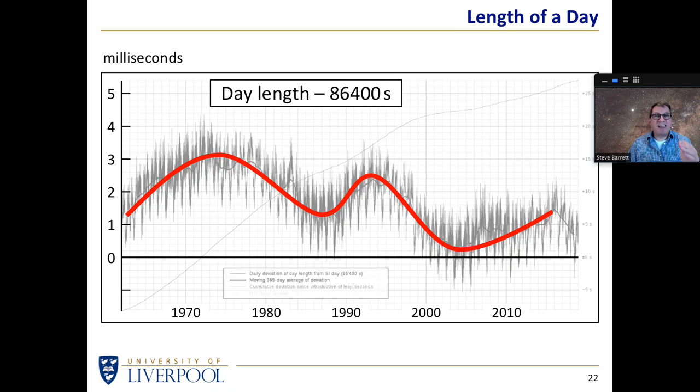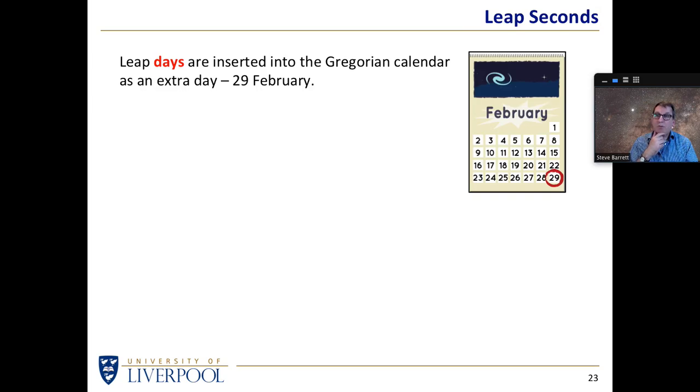But the important thing is we can't easily predict what's coming next. Remember with adjusting the calendar we know exactly what needs to be done. But with leap seconds we need to know how long the day is but the day keeps changing and it's rather difficult to predict what the day length is going to be in 2025 or 2030. So how do we know until we get there whether or not we need a leap second or not?